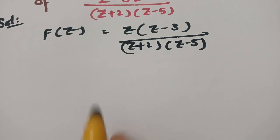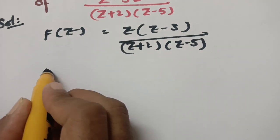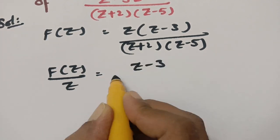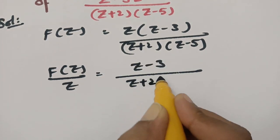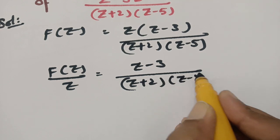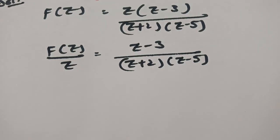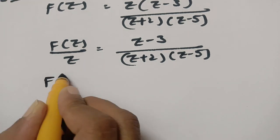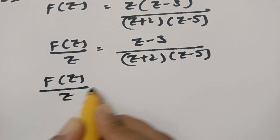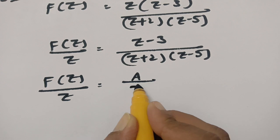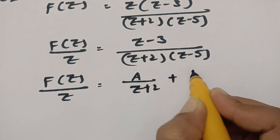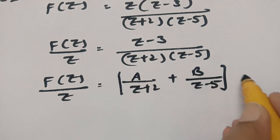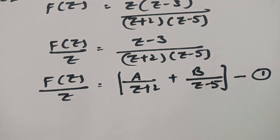Now I am bringing this Z to the other side. So F of Z by Z can be written as Z minus 3 by Z plus 2 into Z minus 5. Resolving into partial fractions: F of Z by Z equals A by Z plus 2 plus B by Z minus 5. Name this equation 1.